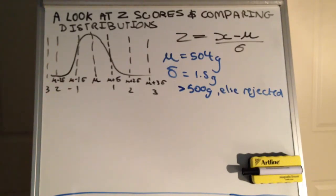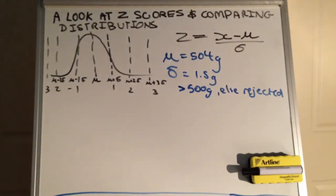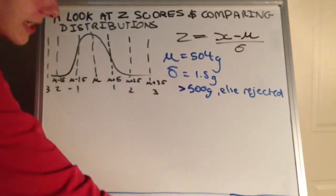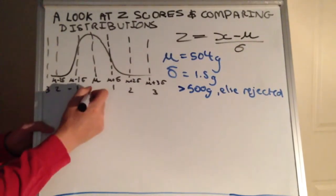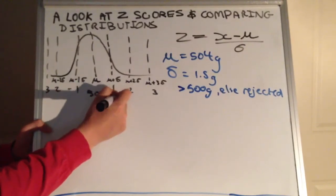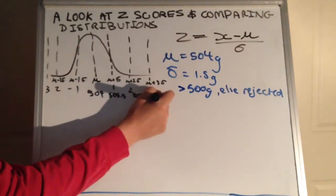The first part is to shade the region of cans that will be rejected on a scaled normal distribution that has z-scores on the x-axis with gram weights. I've got my z-scores here — mu take the standard deviations or mu plus the standard deviations depending on whether we're looking right or left. We need to work out where the 500 gram mark actually fits. The mean is 504 grams and the standard deviation is 1.5 grams. Adding one standard deviation gives 505.5, then 507, then 508.5. Going the other way: 504 minus 1.5 gives 502.5, then 501, then 499.5.